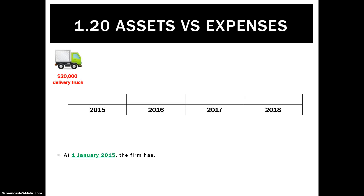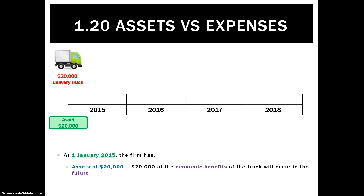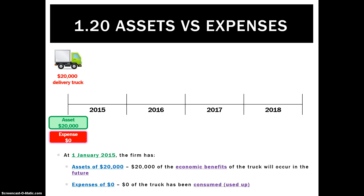Taking year one — at the 1st of January, when we first buy the truck, we have an asset of $20,000. We haven't used any of the truck's economic benefits, and therefore there's no expense.